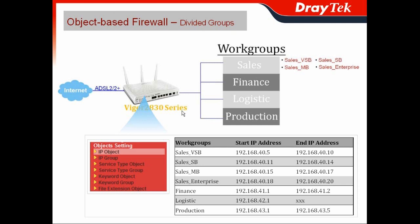For example, you may have a Vigor 2830 security firewall for the ADSL internet feed. For your company, which includes a Sales department, Finance department, Logistics department, and Production department. Also, they may have sub-workgroups in each department.